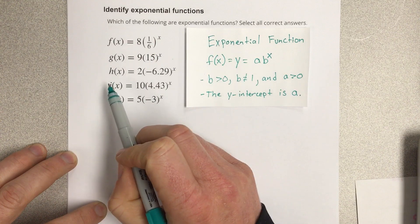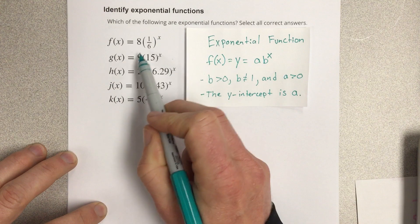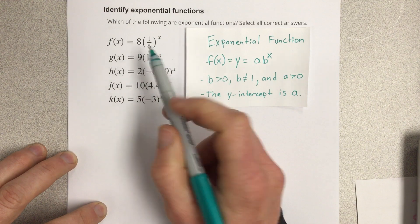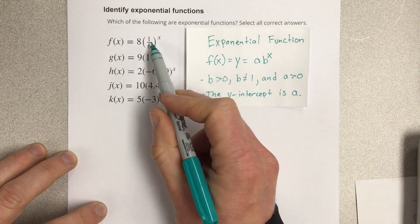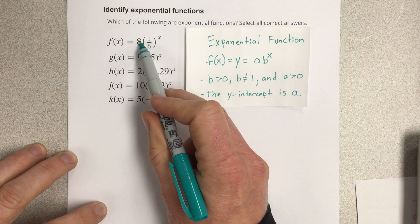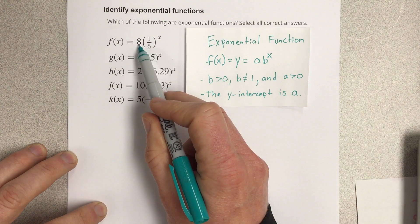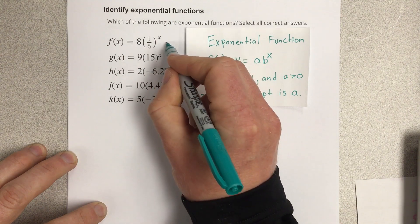So we look at this, it has a variable on the exponent, one sixth is the b value, b is greater than zero, and b is not equal to one, so that satisfies that piece. We have to look at the a value. a needs to be greater than zero, a is greater than zero, so this is an exponential.